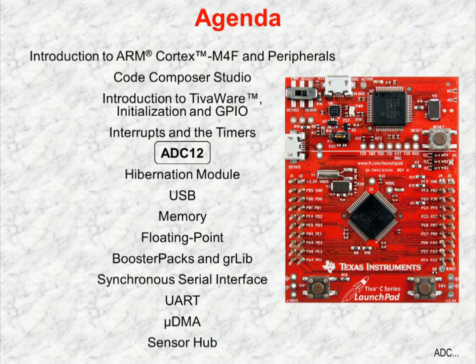Chapter 5 covers the 12-bit analog-to-digital converter, or ADC12. The TM4C123GH6PM has two of these ADCs. One channel of the ADC12 is connected to an internal temperature sensor. You'll use that sensor in the lab to monitor the temperature of the microcontroller and experiment with the ADC12.